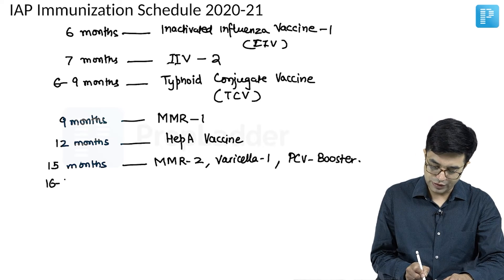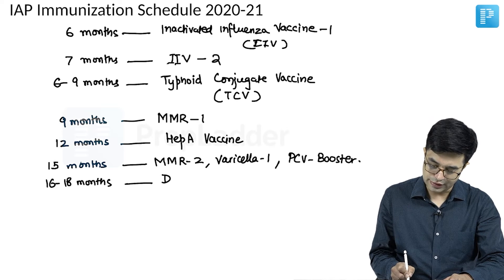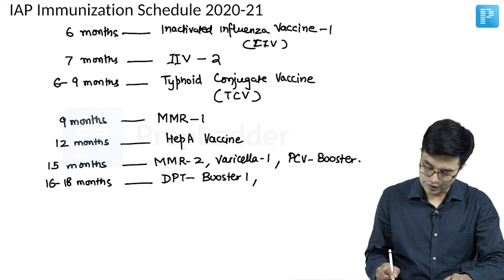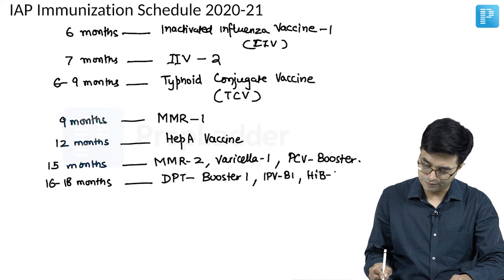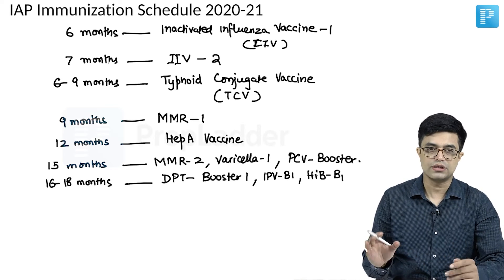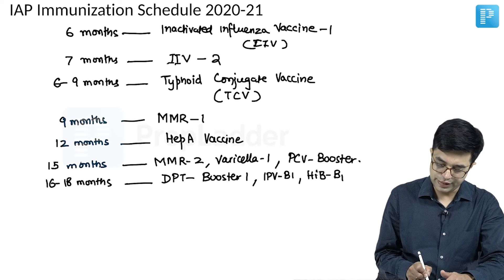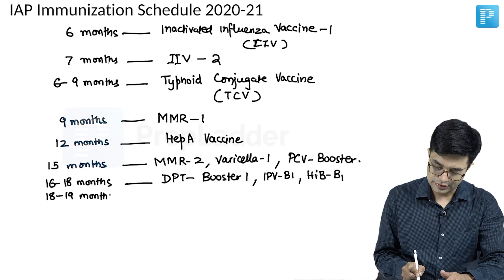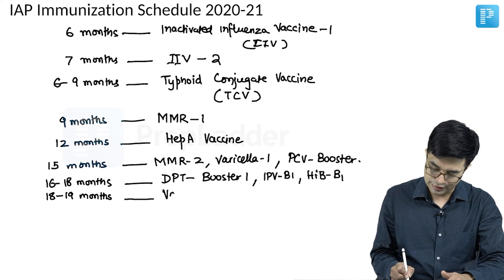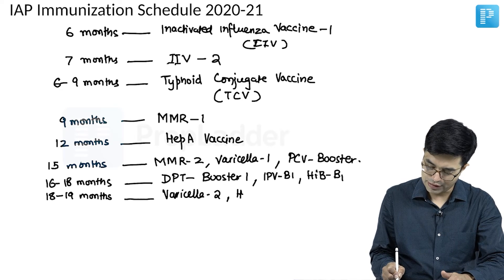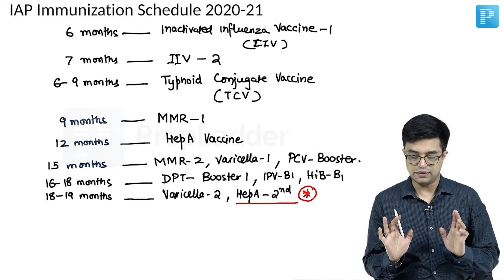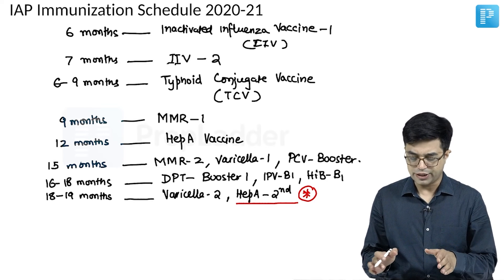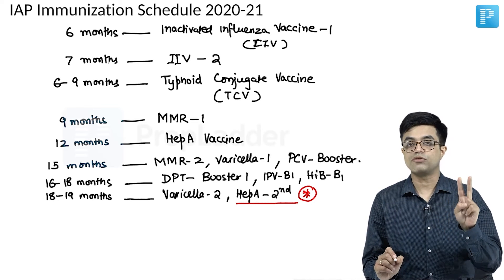At 16 to 18 months, you give DPT booster 1 (whole cell or acellular), IPV booster 1, and Hib booster 1. Hepatitis B and rotavirus boosters are not recommended, so they do not appear here. Then at 18 to 19 months, you write down varicella 2 and hepatitis A second dose — marked with a star — which requires explanation.